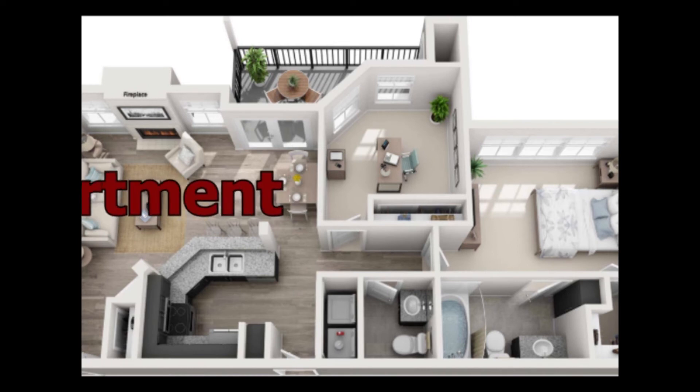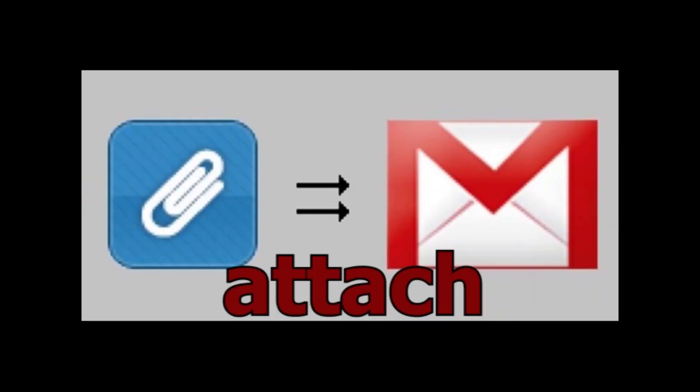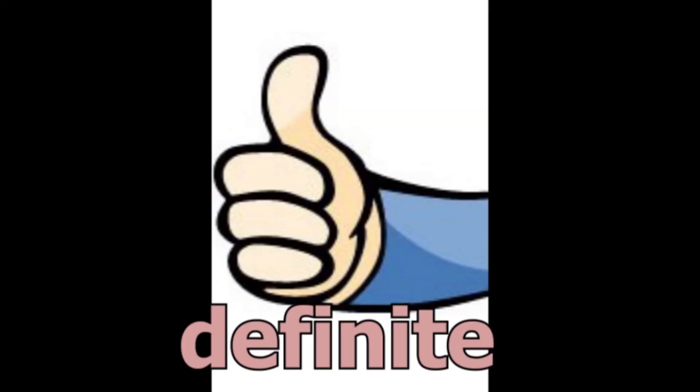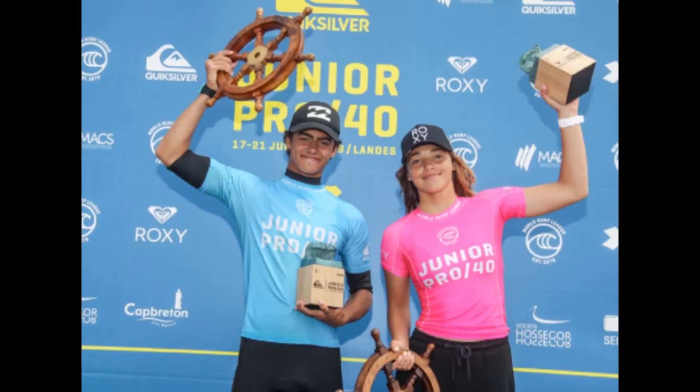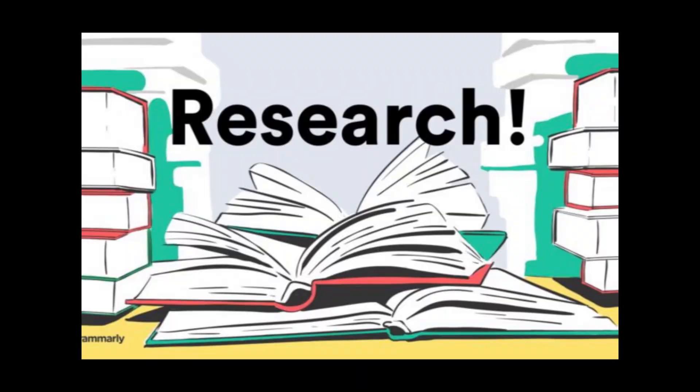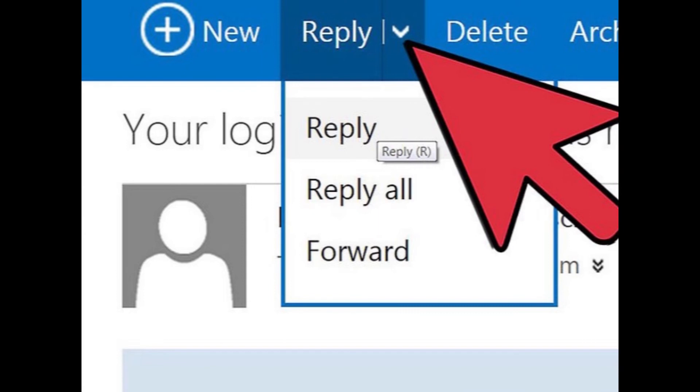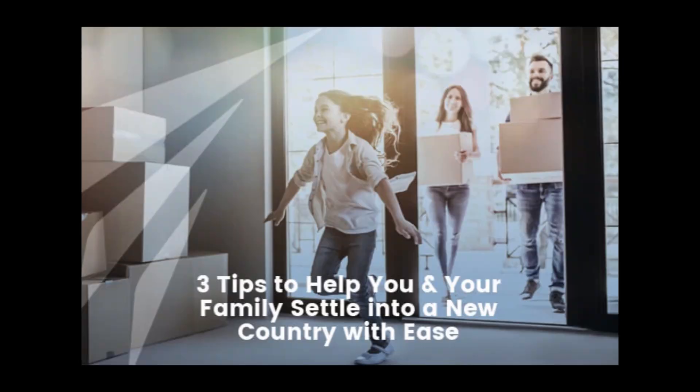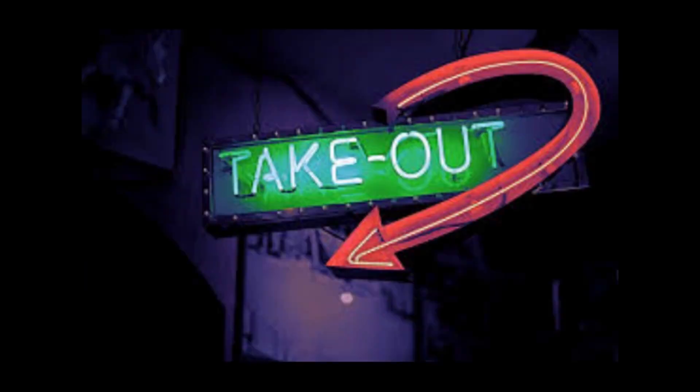Unit 1, Period 1, Activity 1. The words are: attach, cancel, definite, depart, district, junior, P.S. (postscript), research, reply, settle in, show someone round, take someone out.